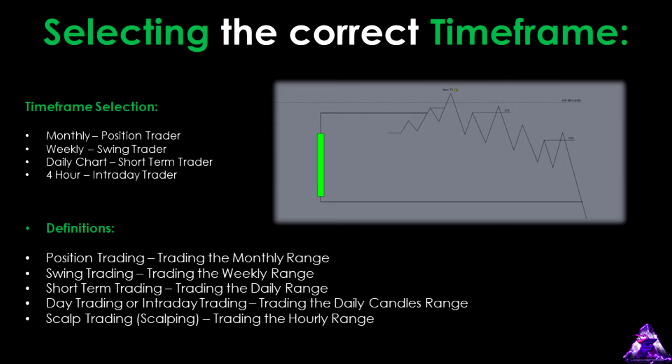This allows us to form a well-rounded directional bias that guides our decisions as intraday or short-term traders. Following a specific direction on the lower time frame doesn't mean we'll always trade strictly in that direction — on lower time frames, we may even take counter-trend trades. However, in general, if you align your trades with the direction of the weekly and monthly time frames, you'll mostly encounter high-probability setups.